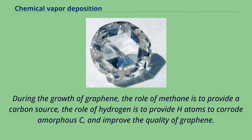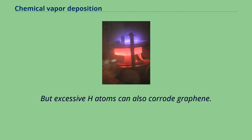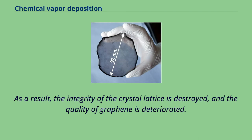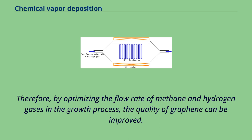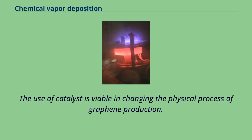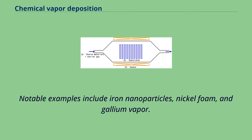But excessive H atoms can also corrode graphene. As a result, the integrity of the crystal lattice is destroyed and the quality of graphene is deteriorated. Therefore, by optimizing the flow rate of methane and hydrogen gases in the growth process, the quality of graphene can be improved. The use of catalysts is viable in changing the physical process of graphene production. Notable examples include iron nanoparticles, nickel foam, and gallium vapor. These catalysts can either be used in situ during graphene buildup, or situated at some distance away at the deposition area. Some catalysts require another step to remove them from the sample material.